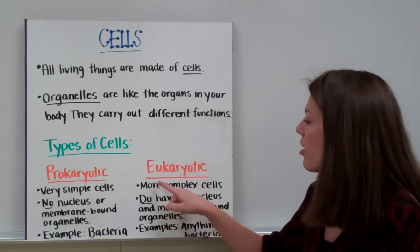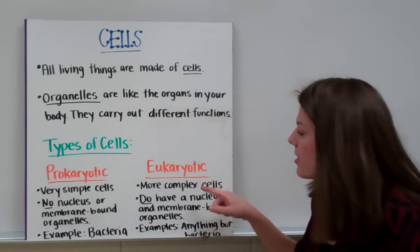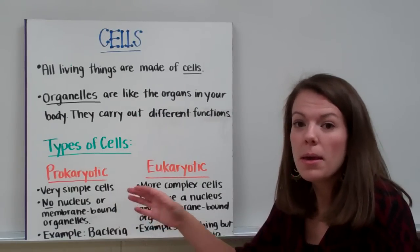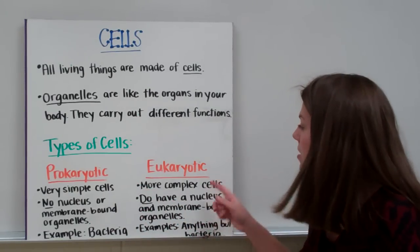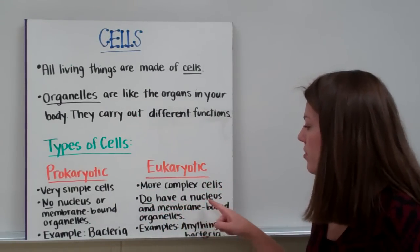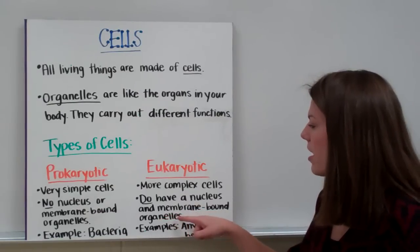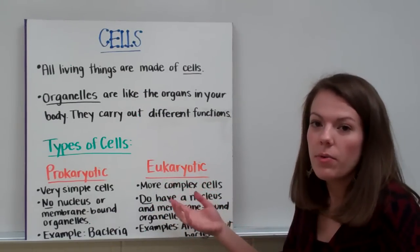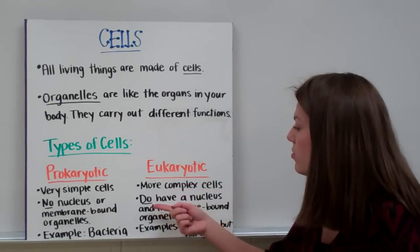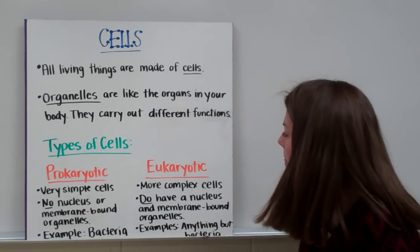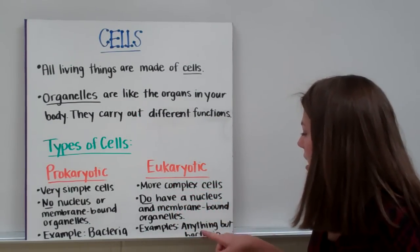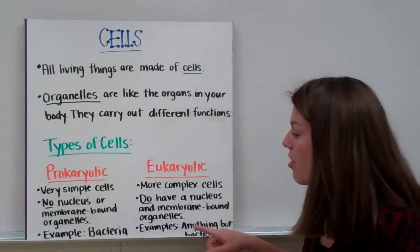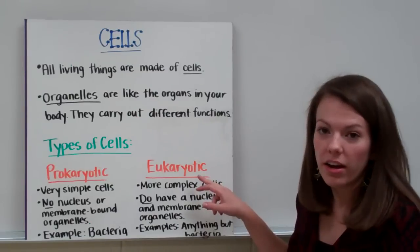The other type of cells are eukaryotic cells. Eukaryotic cells are much more complex than prokaryotic cells because of what they have inside them. Eukaryotic cells do have a nucleus and other membrane-bound organelles. A neat way to remember this is that 'eu' sounds like 'do' — eukaryotic cells do have a nucleus. Eukaryotic cells include anything on Earth but bacteria.